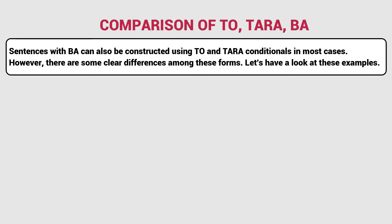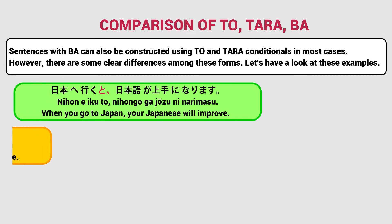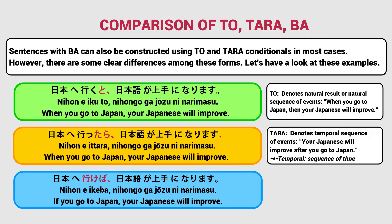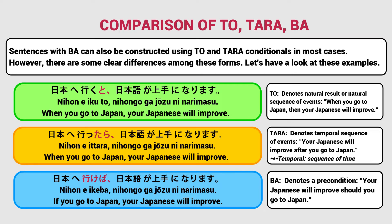Comparison of to, tara, and ba. Sentences with ba can also be constructed using to and tara conditionals in most cases. However, there are some clear differences. To denotes natural result or natural sequence of events: when you go to Japan, your Japanese will improve. Tara denotes temporal sequence: your Japanese will improve after you go to Japan. Ba denotes a precondition: your Japanese will improve should you go to Japan.